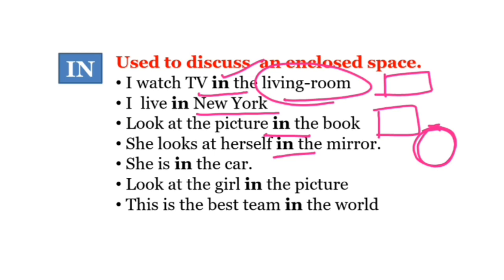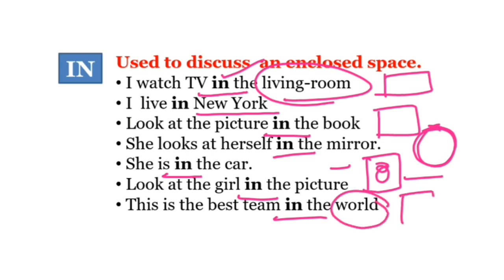आप हिंदी से translation करके हर समय prepositions को सही solve नहीं कर सकते। 'She is in the car' — car एक enclosed चीज़ है। 'Look at the girl in the picture' — picture की भी एक limit है, picture के बाहर picture नहीं है। 'This is the best team in the world' — world का अपना एक दाइरा और limit है, तो यहाँ भी हम 'in' use करेंगे।